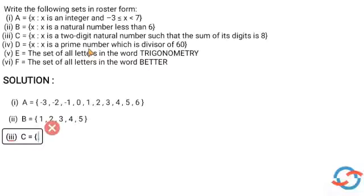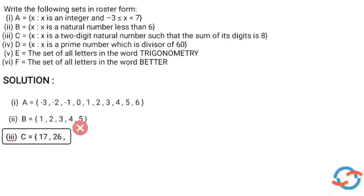We start with 10: 1 plus 0 equals 1, not 8. Next, 17: 1 plus 7 equals 8, so 17 is included. Then 26: 2 plus 6 is 8, so 26 is included. Then 35: 3 plus 5 equals 8, so 35 is included.